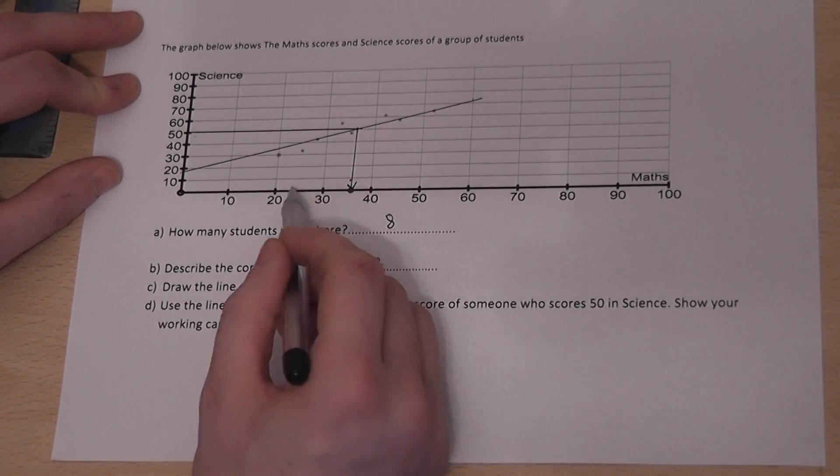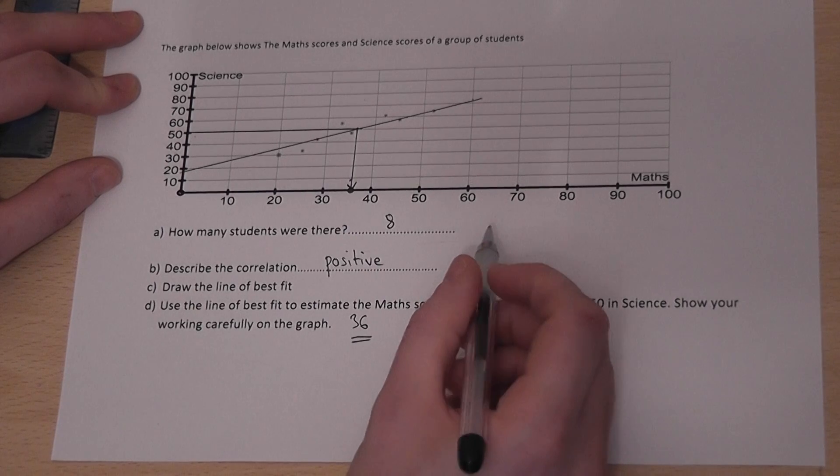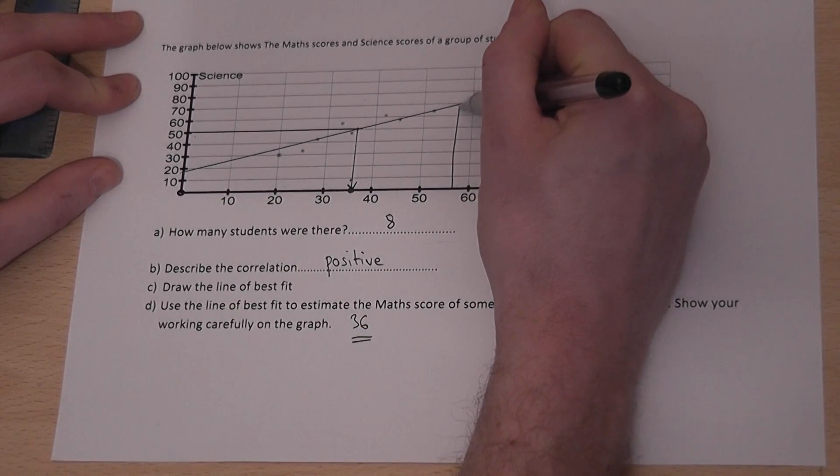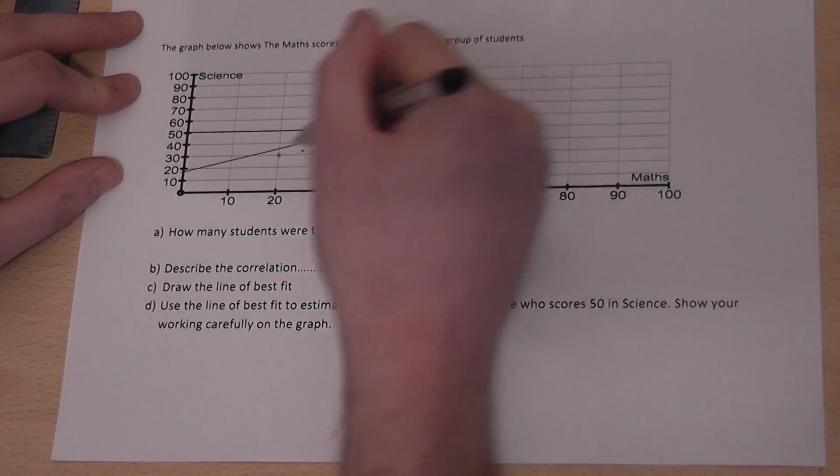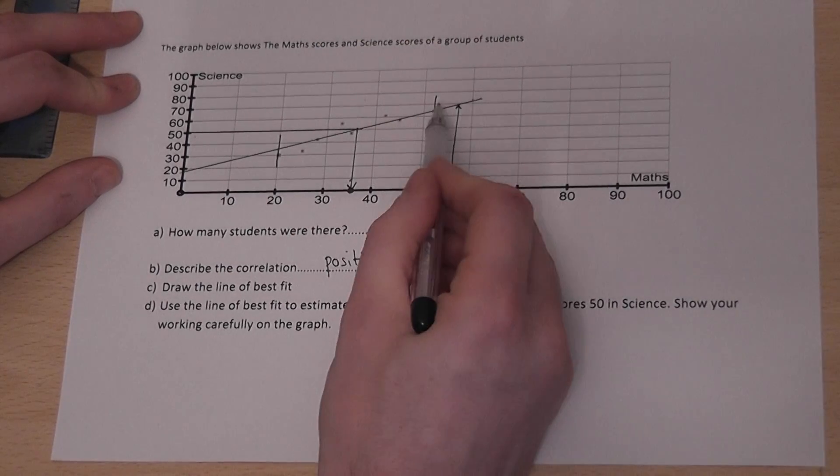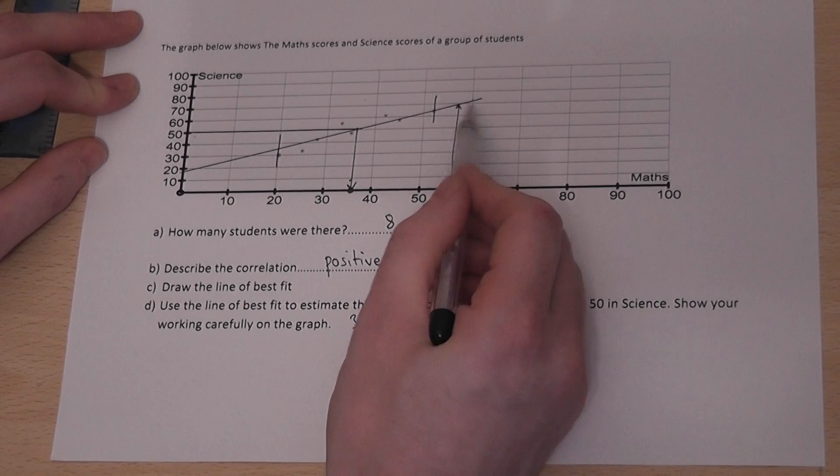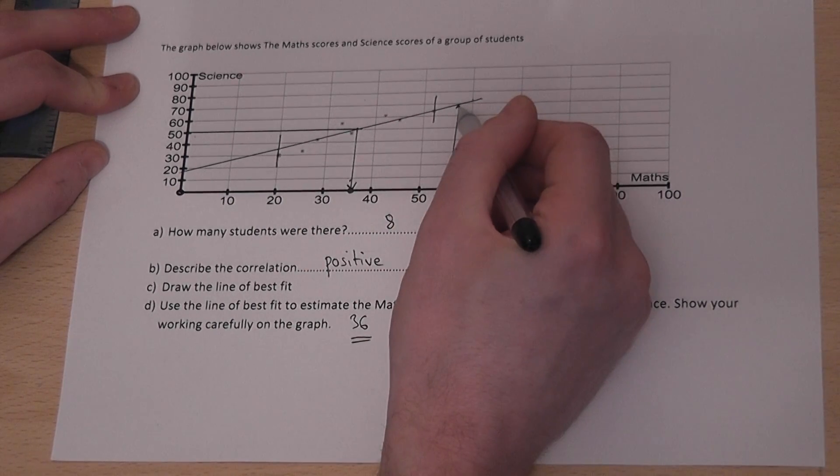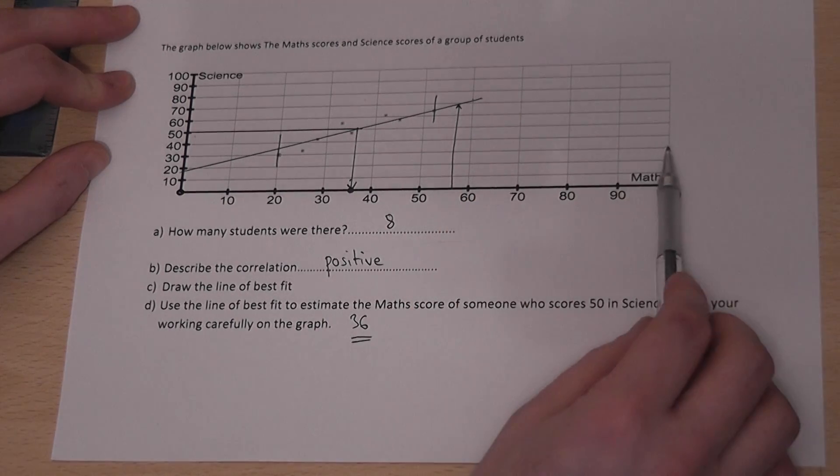It would not be realistic to go beyond the dots. So for example, if I use the line to estimate a score over here somewhere, I have gone beyond the range of dots. And that is called extrapolation. Interpolation is quite reliable. Extrapolation is less so.